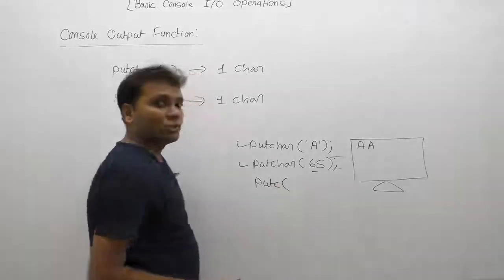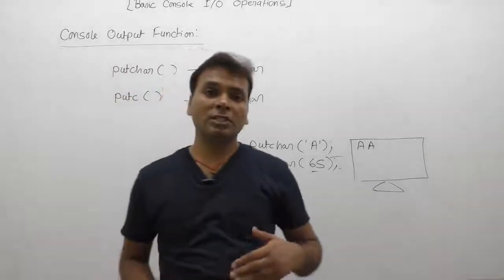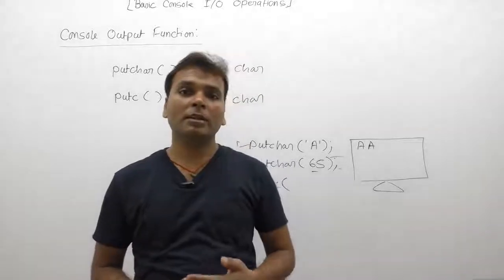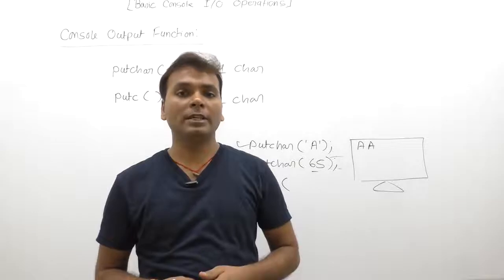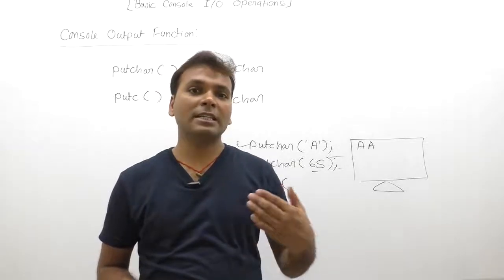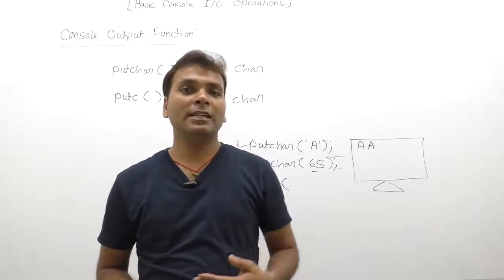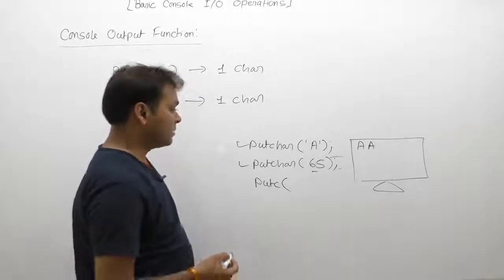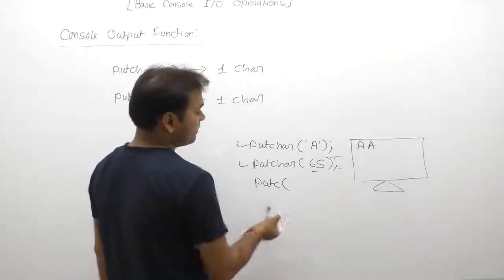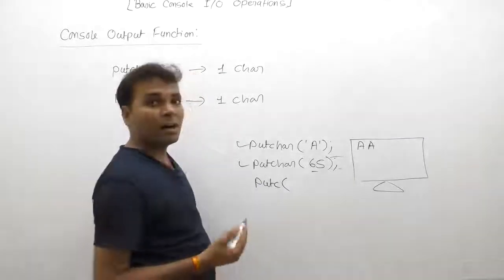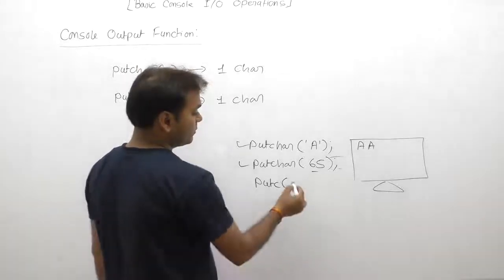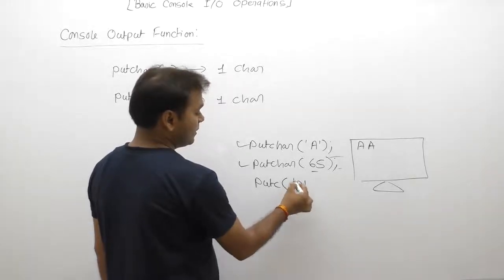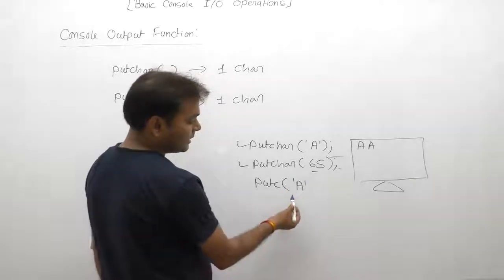putchar is already pre-connected with the standard output buffer stdout. However, the putc function can write data to any specified buffer — it may be stdout, stderr, or any other output buffer. Therefore, with putc we must supply an extra parameter specifying stdout or any other buffer name. For example, passing character 'A' with putc requires specifying the buffer.